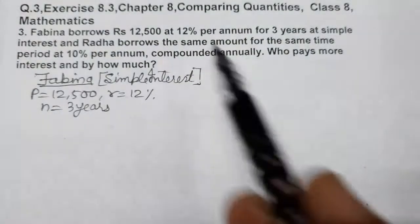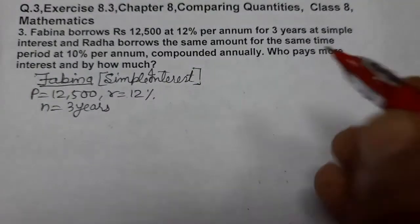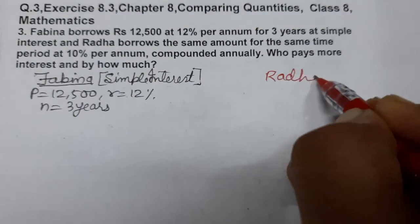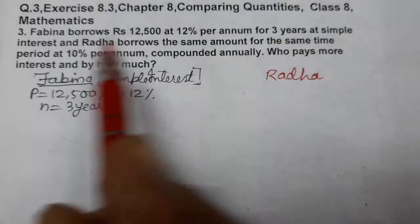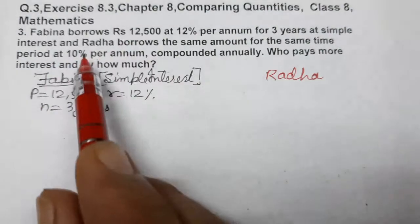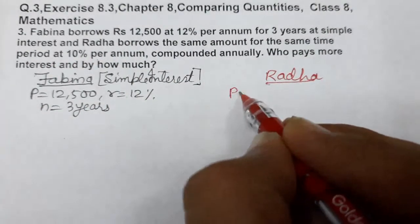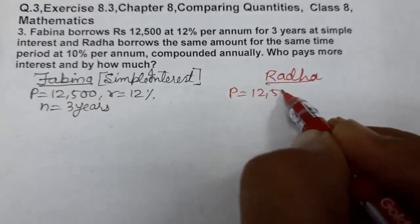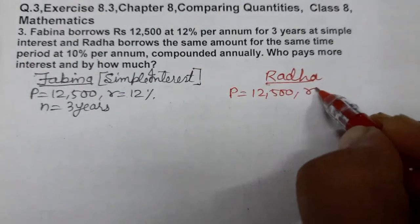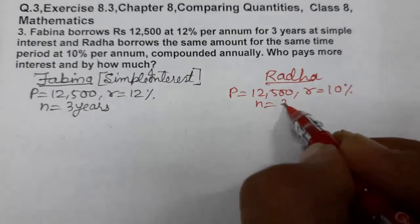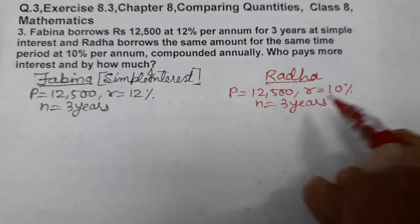Radha borrows the same amount for the same time period at 10%. Principal is same, 12,500, rate is 10%, and same time, n is also 3 years, but rate is different.